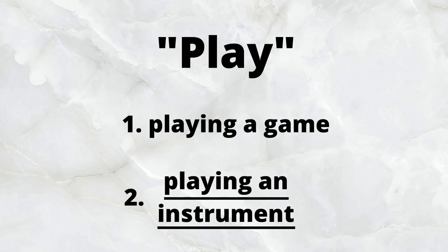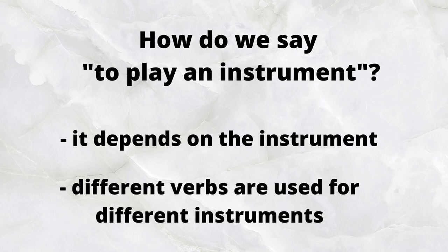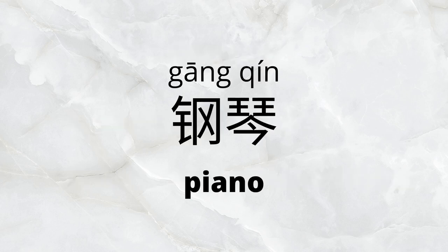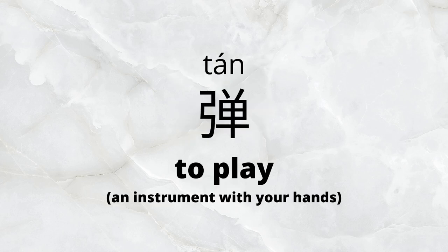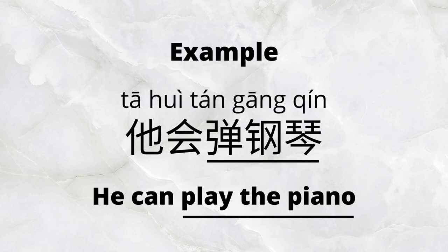For the second section, what about instruments? How do you say to play an instrument? The answer is that it depends on the instrument — a different verb can be used for a different kind of instrument. 钢琴 is how to say piano. We use the verb 弹 for a piano or a string instrument you play with your hands, so 弹钢琴 means to play the piano. 他会弹钢琴 — he can play the piano.